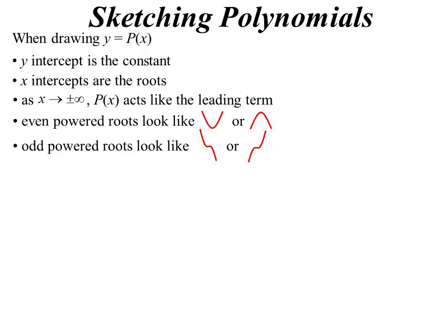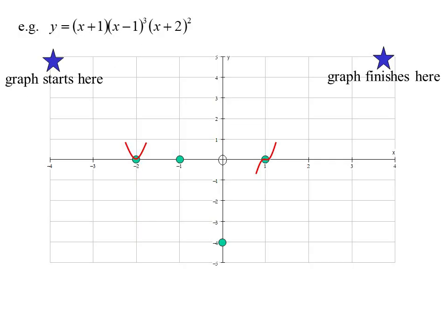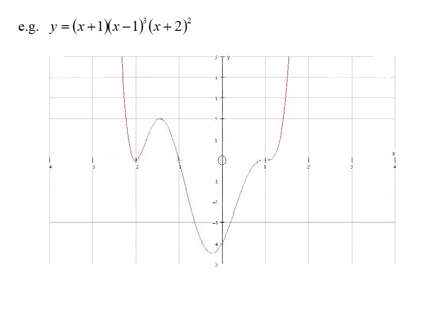Odd power roots, other than the power of 1, of course, will have that inflecting shape. Over at positive 1, it will look like a cubic. We know it goes through there. So we've got to go through all these points, got to start up here. There we go.